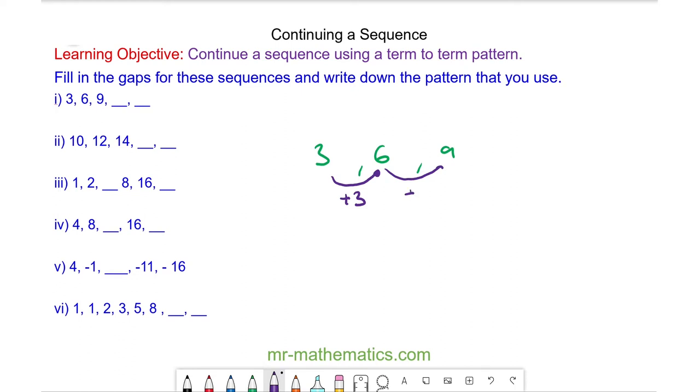3 add 3 makes 6, and 6 add 3 makes 9. Doing this again, we get 12, and then 12 add 3 is 15. To describe this sequence, we say it starts at 3 and the term to term rule is add 3.